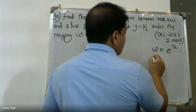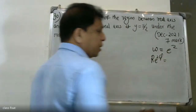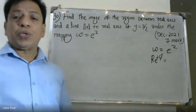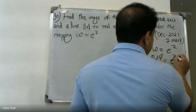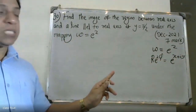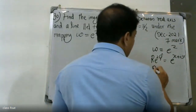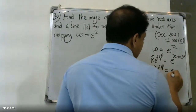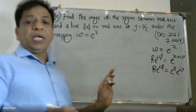In the diagram, W = R·e^(iφ), and W = e^z where z = x + iy. So W = e^(x+iy).